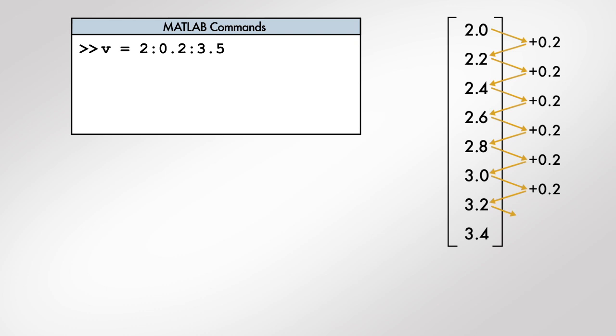We see that in this particular example, the resulting vector does not include the last value in the command. The last value is not included because the colon operator creates a vector that contains the last value only if it is properly spaced with the other values in the vector.